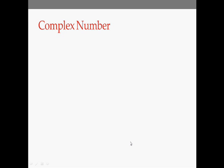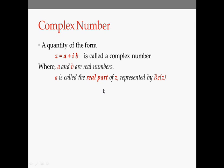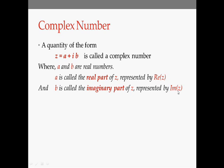Now let me introduce the concept of complex numbers. A quantity of the form Z = A + iB is called a complex number, where A and B are real numbers. A is called the real part of Z, written Re(Z), and B is called the imaginary part of Z. So Z can also be written as Re(Z) + i·Im(Z). The imaginary part of Z is itself a real quantity, but when multiplied by IOTA the whole term becomes an imaginary number.